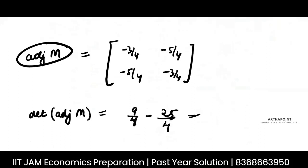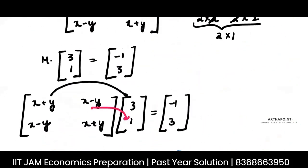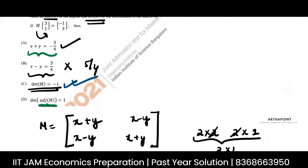And if I find the determinant of the adjoint of M, it would be 9 by 4 minus 25 by 4. This will be 9 by 16 minus 25 by 16, minus 16 by 16, which would be minus 1.